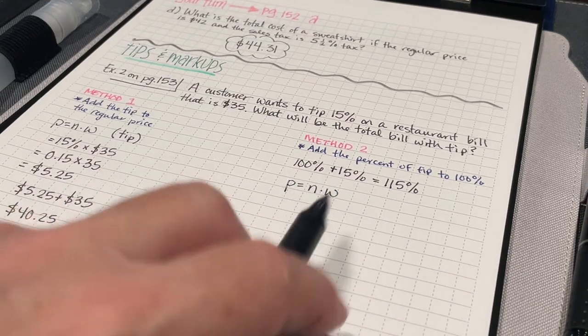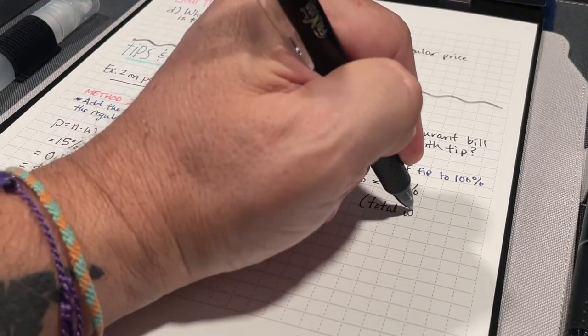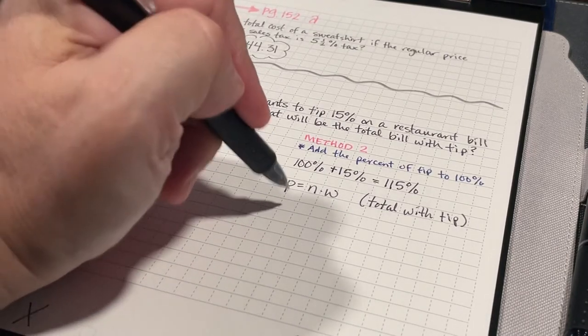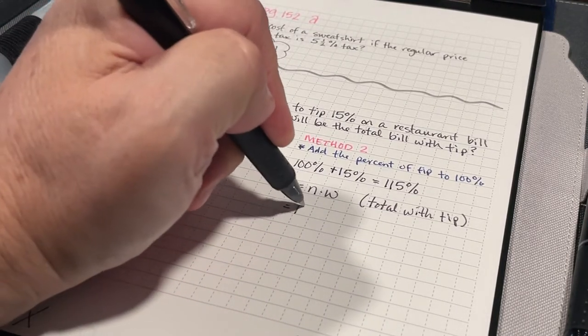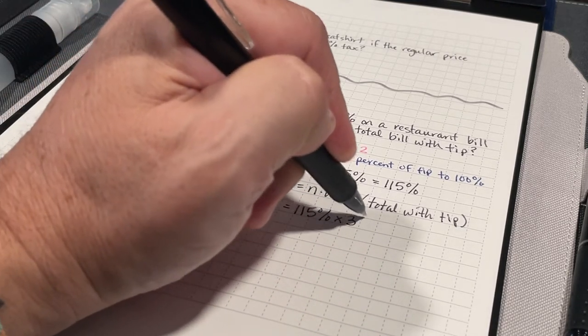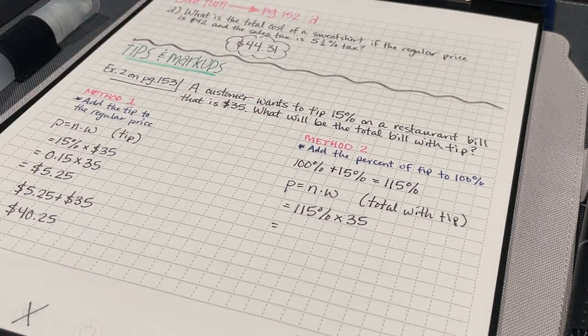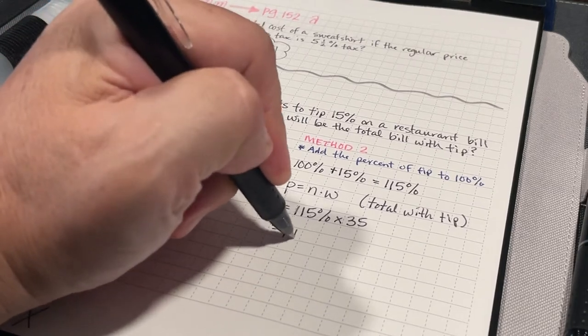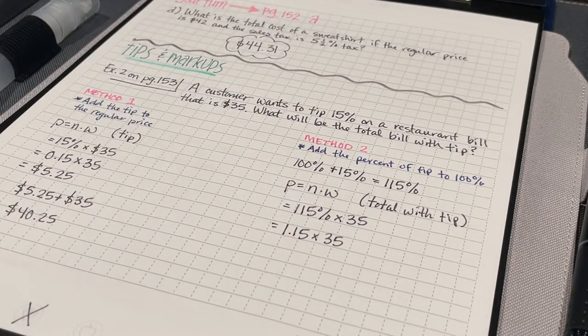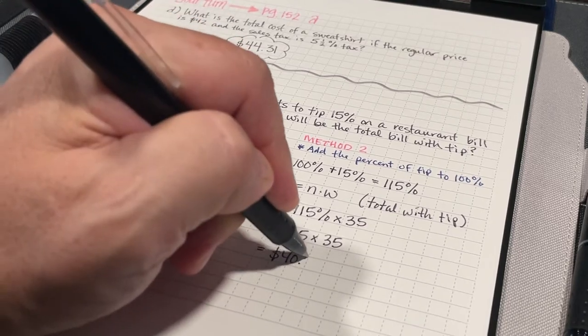Now, I'm going to use the same percent equation. This time, this is going to give me the total with tip. My percent now is 115% times 35, which was the whole. I need to convert 115% into a decimal. That would be 1.15. And I'm going to multiply that by 35. And that's going to give me a total of $40 and 25 cents.